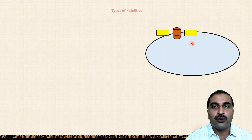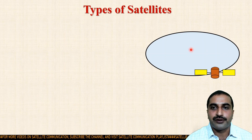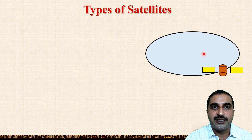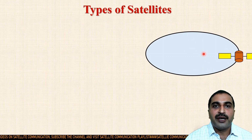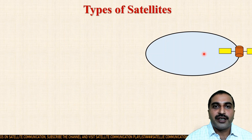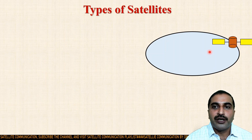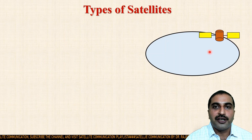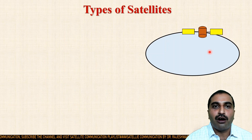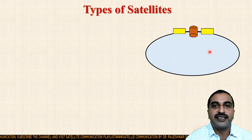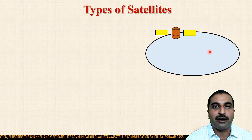The path in which the satellite revolves is known as the orbit of the satellite. It may be circular, hyperbolic, elliptical, or parabolic in nature. The value of eccentricity defines the shape of the orbit.